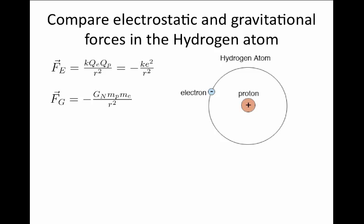If we divide the electrostatic force by the gravitational force, the distance between these two objects squared cancels, and the minus sign will cancel. And we are left with a ratio of k electron charge squared, or e squared, divided by G times the product of the two masses, the proton mass and the electron mass.